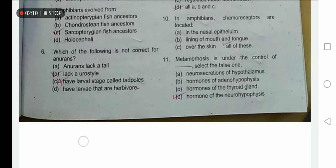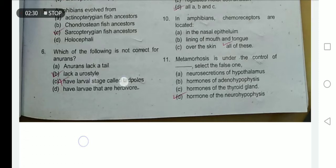Which of the following is not correct for Anura? Neurons lacking urostyle — the urostyle is a distinguishing character of the order Anura, a specific kind of bone present in frogs, so this is not true for Anura. Adult Anura lack a tail — this is true. They have larval stages called tadpoles — this is true.